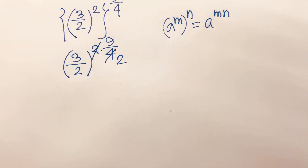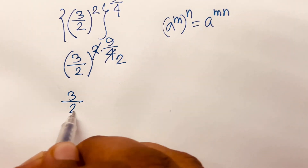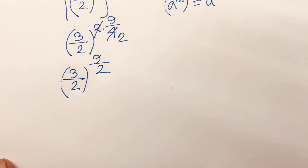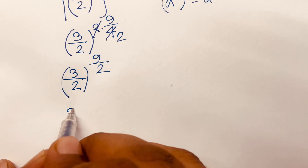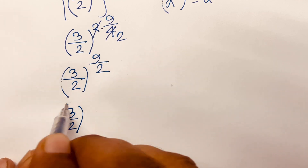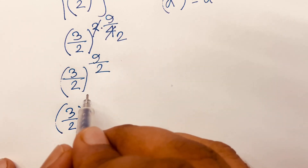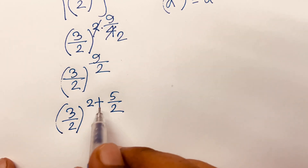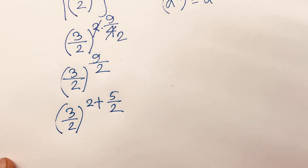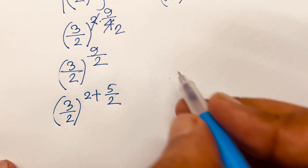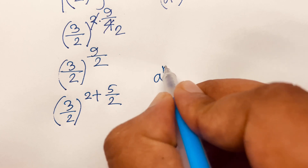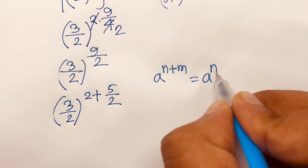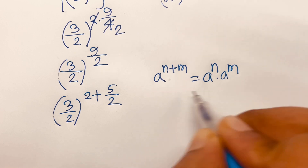So we have (3/2) to the power (9/2). We can write 9/2 as 2 + 5/2, since 2 + 5/2 = 9/2. Using the exponential rule aⁿ⁺ᵐ = aⁿ · aᵐ, we can split this expression accordingly.